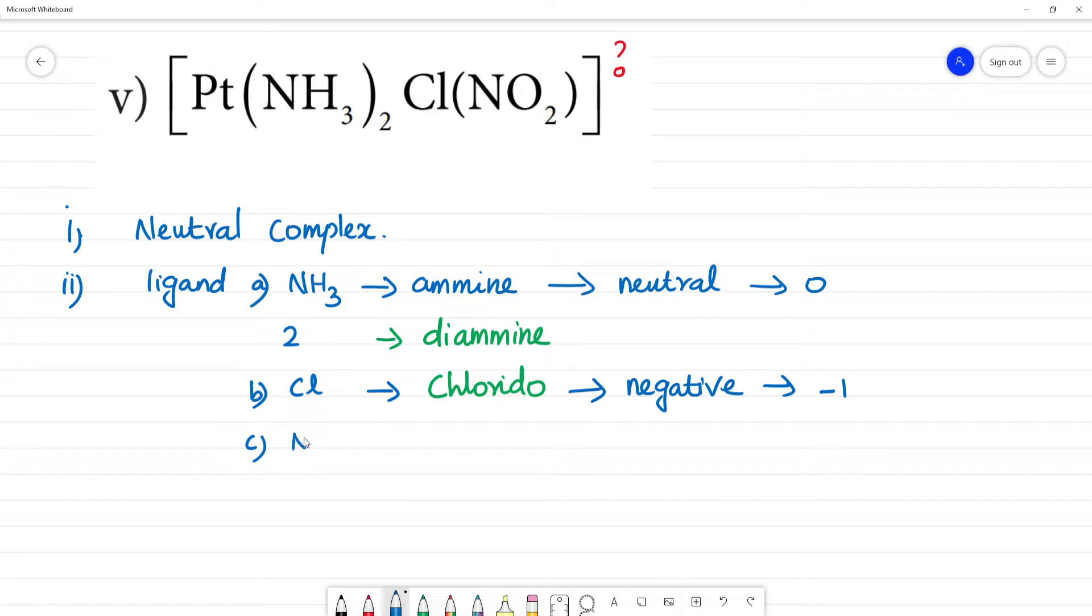Next, the third ligand is NO2. NO2 is nitrito. It is also a negative ligand. The charge is minus 1. NO2 is an ambidentate ligand. This is ambidentate. What does ambidentate mean? One compound, two donating sites are present. NO2 has electrons here and electrons there. So this is an ambidentate ligand.